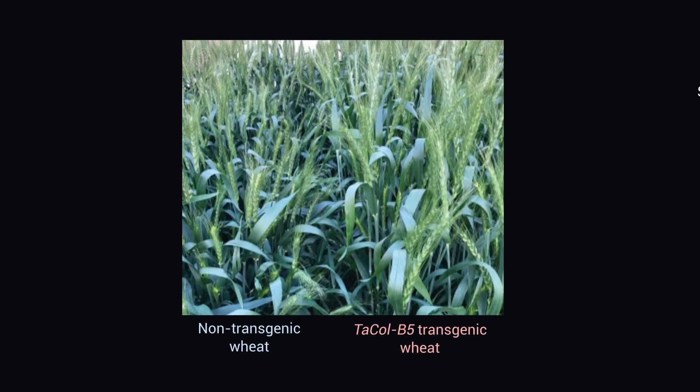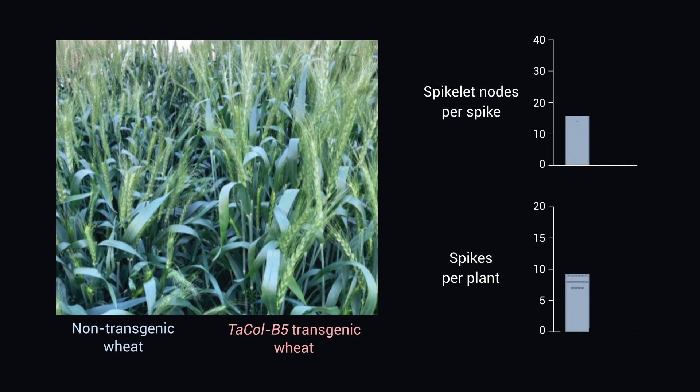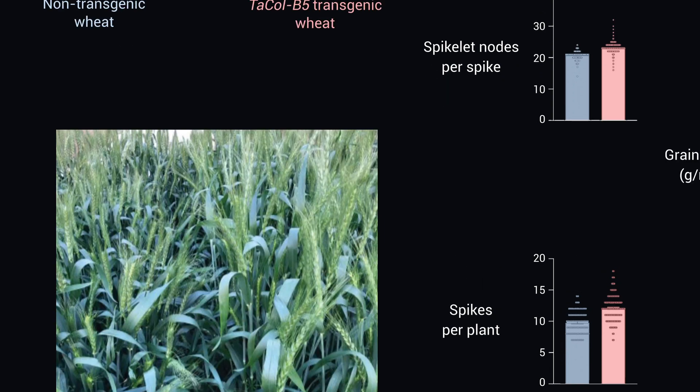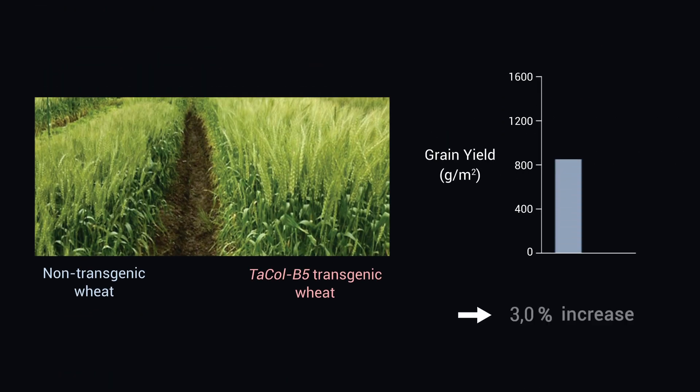Constitutive overexpression of the dominant CoL5 allele in a wheat cultivar increases the number of spikelet nodes per spike and produces more tillers and spikes, thereby enhancing grain yield in transgenic plants under field conditions.